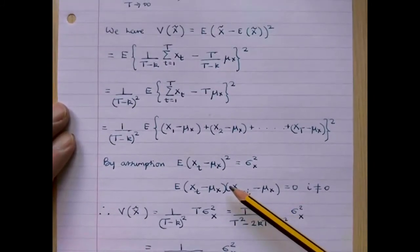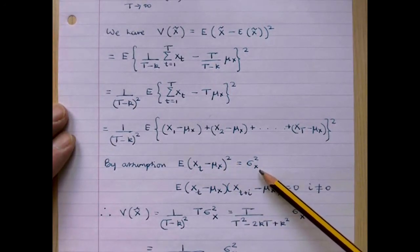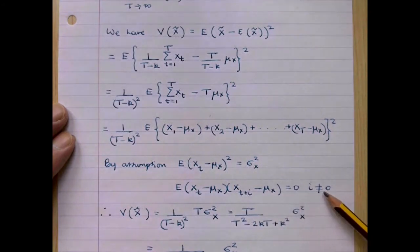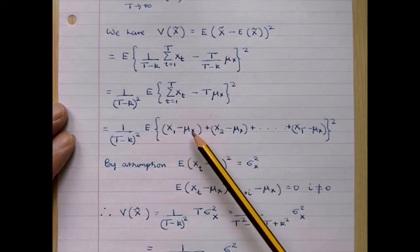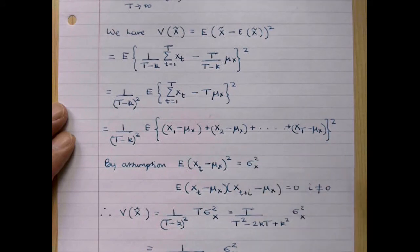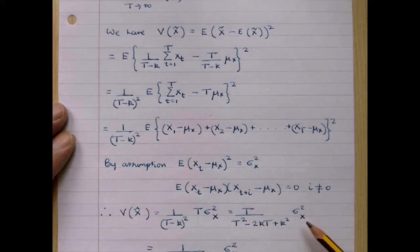Now, by assumption, the expected value of xt minus mu x squared equals sigma squared x — that's just the definition of the variance of the x variable. And also, we've assumed that these are independent random variables, so the expected value of xt minus mu x multiplied by x_{t+i} minus mu x equals 0 when i is not equal to 0. This means we can simplify the expression: each squared term xt minus mu x squared equals sigma squared x, and all cross-product terms drop out. Therefore, the variance of x tilde equals 1 over T minus k squared multiplied by T sigma squared x, or equivalently T over T squared minus 2kT plus k squared times sigma squared x.